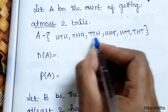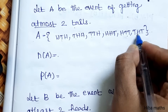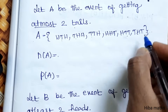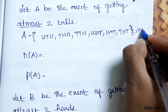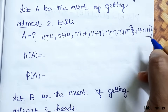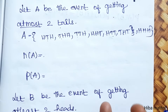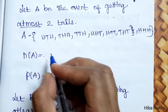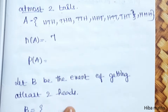Counting the favorable outcomes for event A — getting at most 2 tails — we count: 1, 2, 3, 4, 5, 6, 7. The only excluded outcome is HHH — wait, actually TTT has 3 tails, so that is excluded. There is no tail in TTT that qualifies — total favorable outcomes is 7.